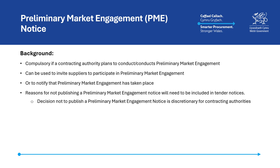Where engagement has been conducted but a Preliminary Market Engagement Notice has not been published, the reasons for not publishing it must be captured in the tender notice. Although the decision not to publish a Preliminary Market Engagement Notice is solely at the discretion of the contracting authority, this decision must be taken in the context of their obligations — for example, those covered under Section 12 of the Act regarding covered procurement objectives, or Section 16 of the Act relating to Preliminary Market Engagement.